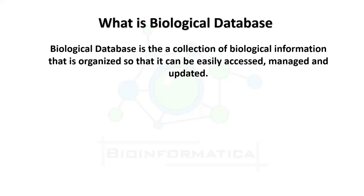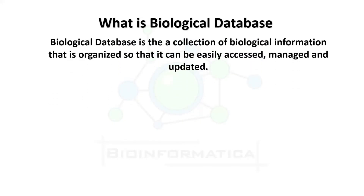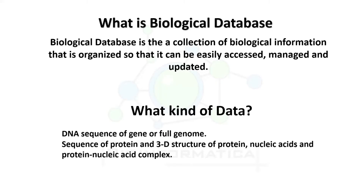So what kind of data do we need to deal with? The classical data of bioinformatics includes DNA sequence of a gene or full genome, sequence of protein and 3D structure of protein, nucleic acids, and protein-nucleic acid complexes. Additional omics data streams include transcriptomics — the pattern of RNA synthesis from DNA — genomics, and proteomics.